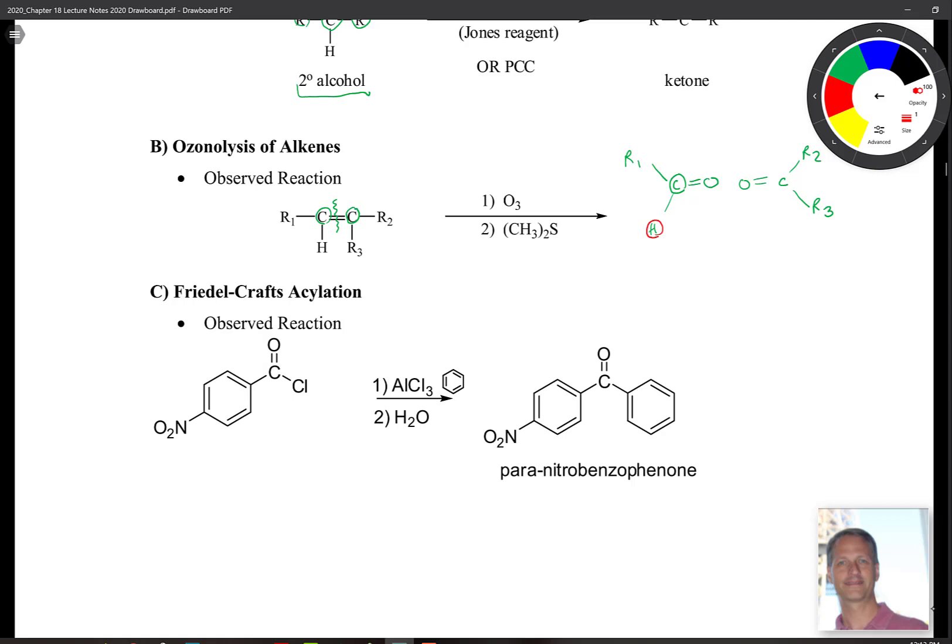Most recently, we saw in the last chapter Friedel-Crafts acylation. We could take an acid chloride like this molecule. That's an acid chloride functional group right here. We can add AlCl3 for our catalyst and benzene, then we would add another ring to it. That's the ring that we added on to this thing. Here you're taking an acid chloride and you're turning it into, in this case, a ketone.